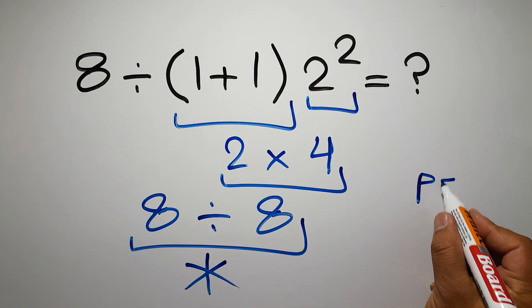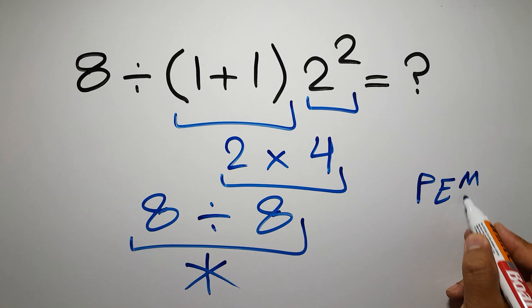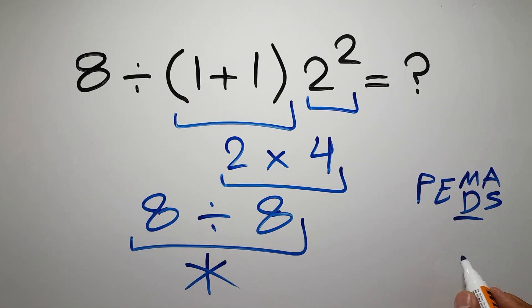First we have to do parentheses, then exponents, then multiplication or division, and finally addition or subtraction. Remember that multiplication and division have equal priority and we have to work from left to right, and the same applies to addition and subtraction.